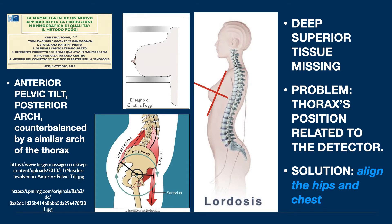In case of lordosis, there is an anterior tilt of the hips and therefore a posterior arch of the hips. This might be regarded as not important by the breast radiographer, but it is, because this arch is counterbalanced by a similar arch of the thorax, which makes it complicated to obtain the correct breast geometry — that is, to have superior and inferior quadrant parallel to each other and to the detector. We are more likely to miss superior posterior tissue. The position of the thorax is to be corrected; the solution requires getting hips and thorax aligned.